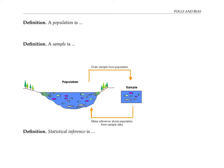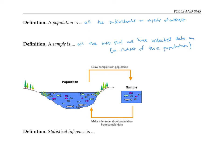In this terminology, a population is all the individuals or objects of interest. And a sample is all the cases that we have collected data on — in other words, a subset of the population. Statistical inference is the process of using data from a sample to gain information about the population of interest.